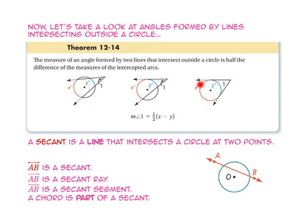Notice that in this diagram, when two tangents intersect outside the circle, the two intercepted arcs together form the entire circle. A secant is a line that intersects a circle at two points, so line AB is a secant — notice that it intersects the circle at two points. Ray AB is a secant ray, and segment AB is a secant segment. Notice that a chord is part of a secant.